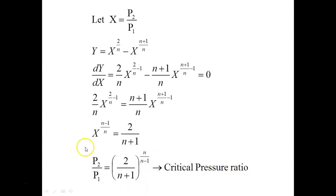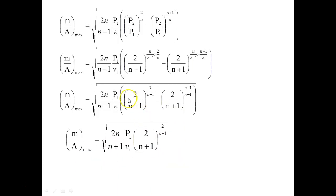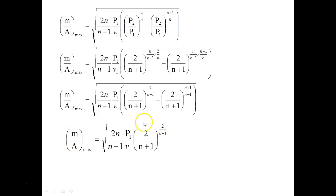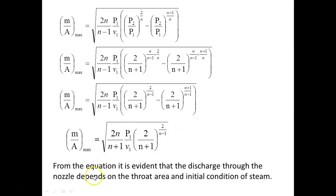The critical pressure ratio equation P₂/P₁ = (2/(n+1))^(n/(n−1)) is used to calculate the critical (throat) pressure in a convergent-divergent nozzle. Substituting this back into the m/A equation gives the maximum mass flow rate: m/A = √(2/(n+1) · P₁/V₁ · (2/(n+1))^(2/(n−1))). It is evident that the discharge depends on the throat area and the initial condition of the steam.